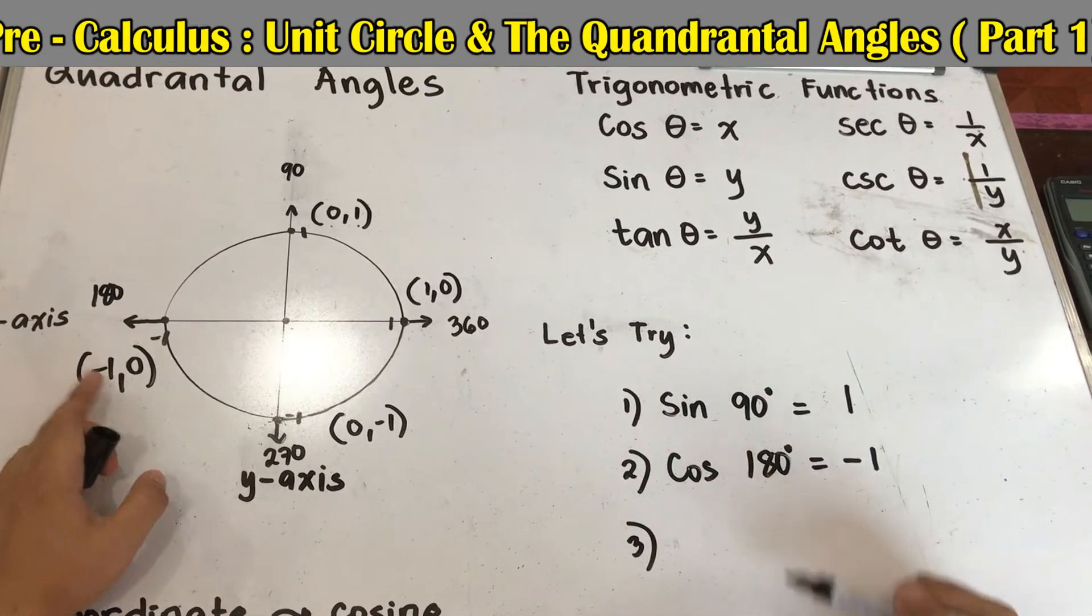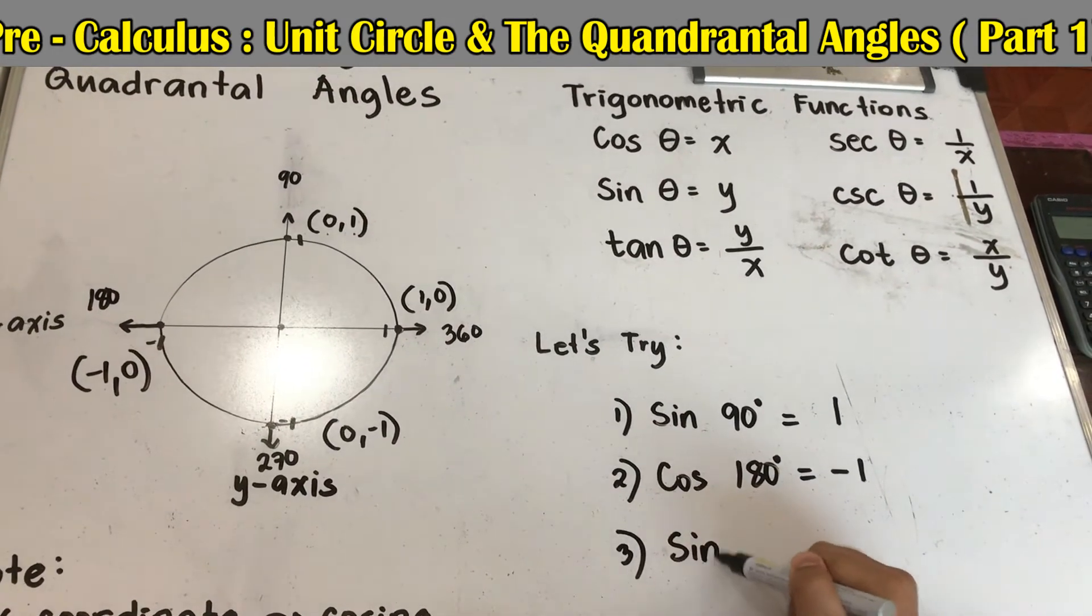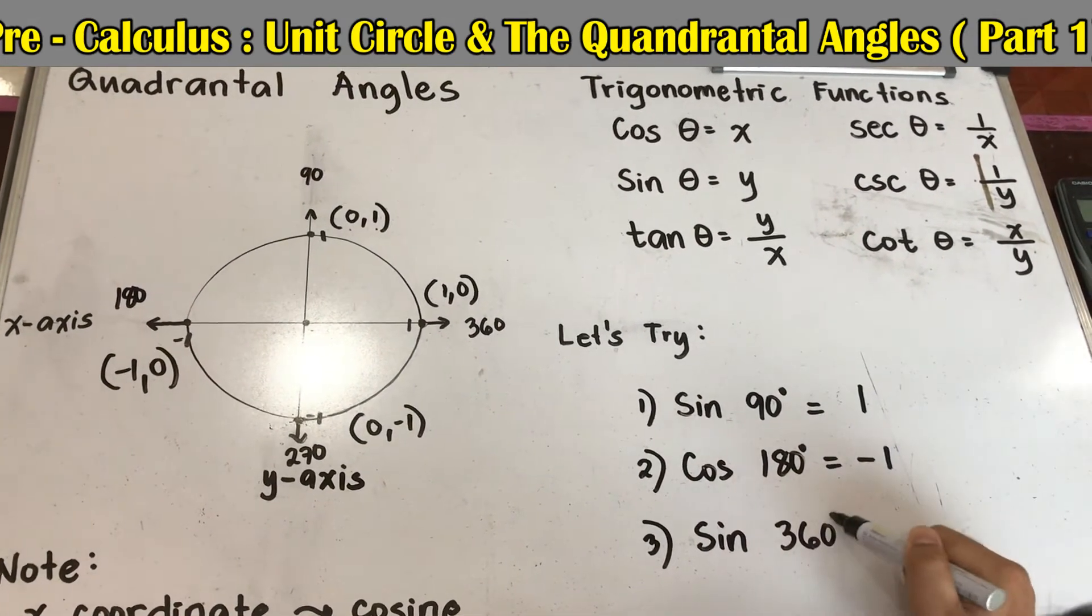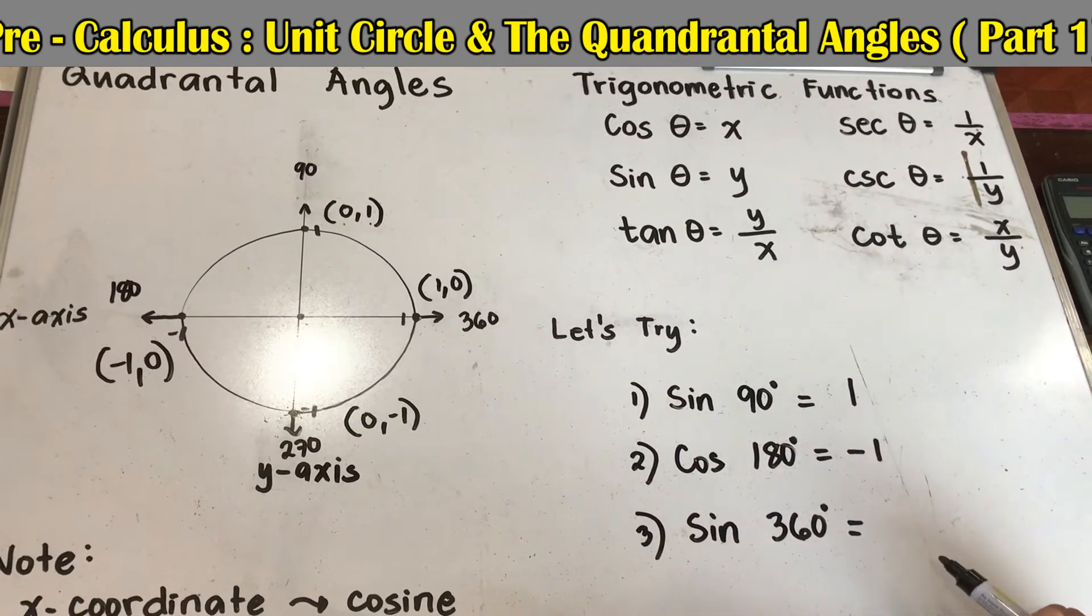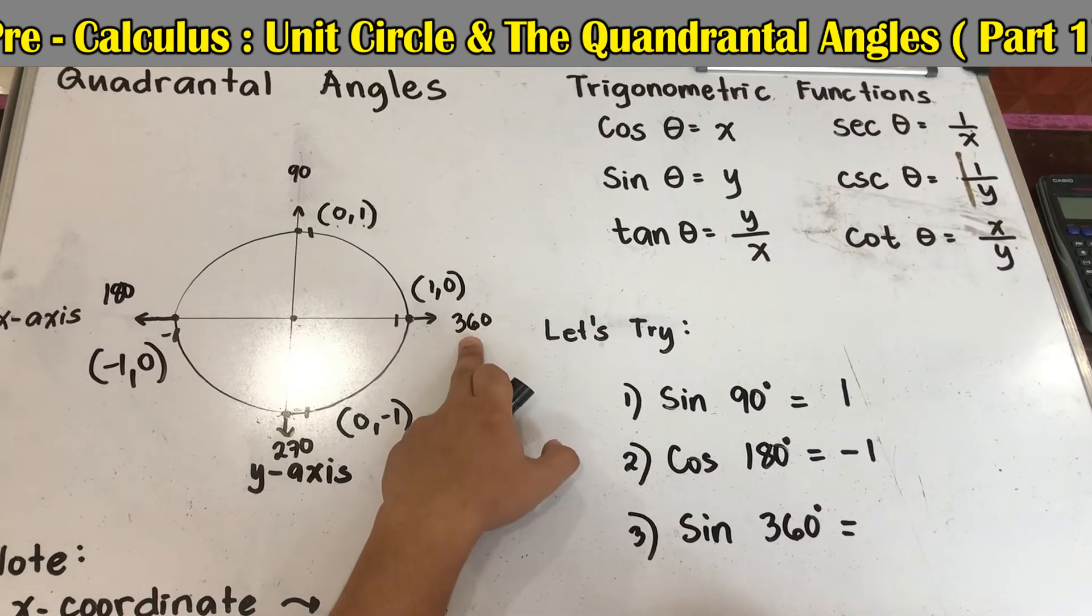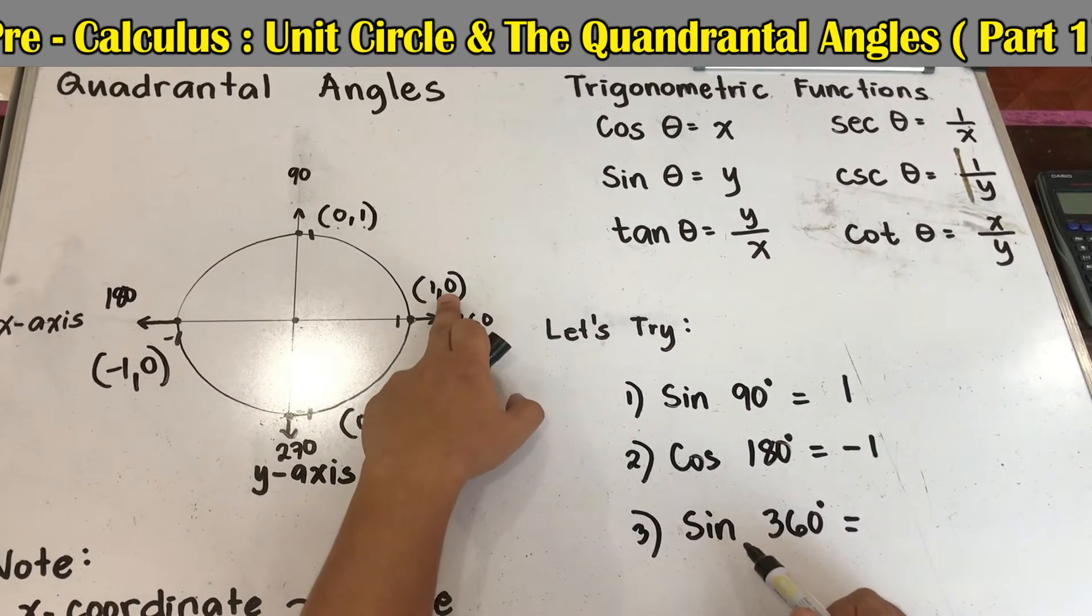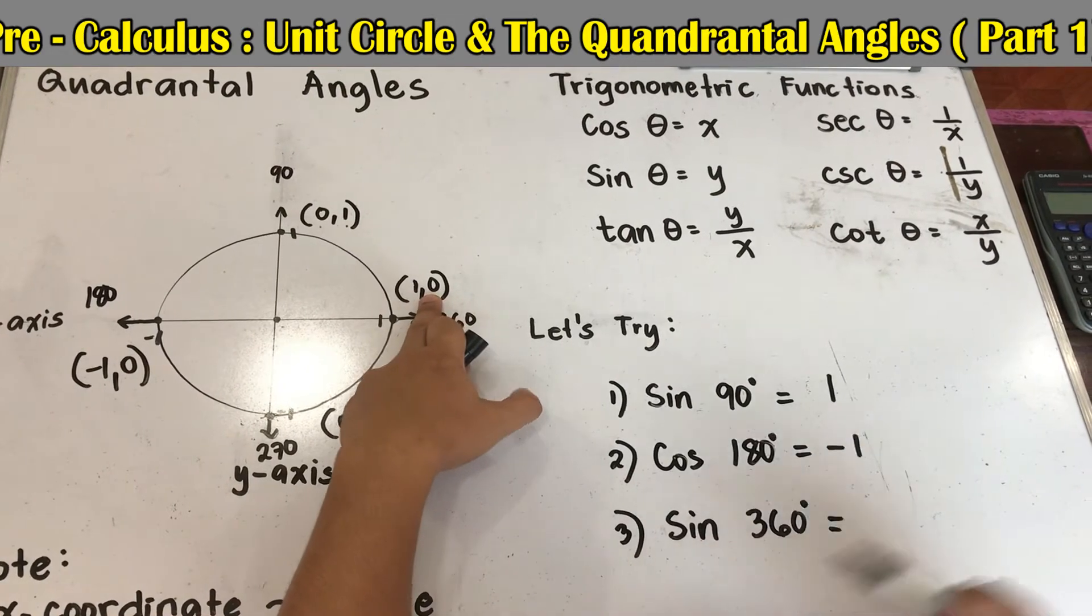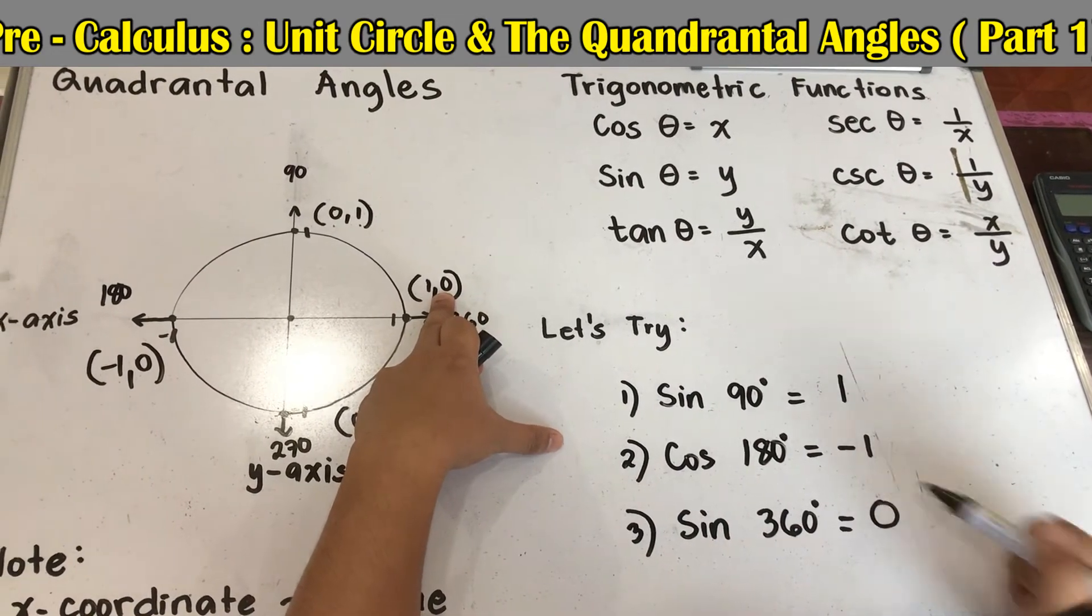Number 3, sine 360 degrees. So 360, sine is for y. So our y value is 0. Therefore, it is 0.